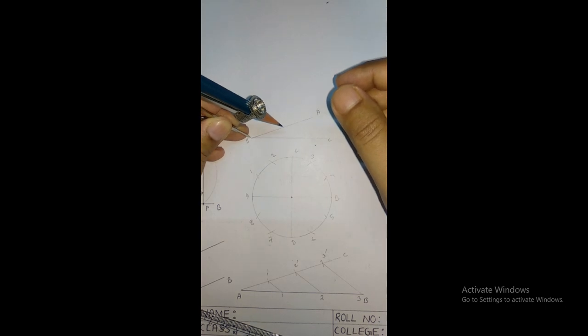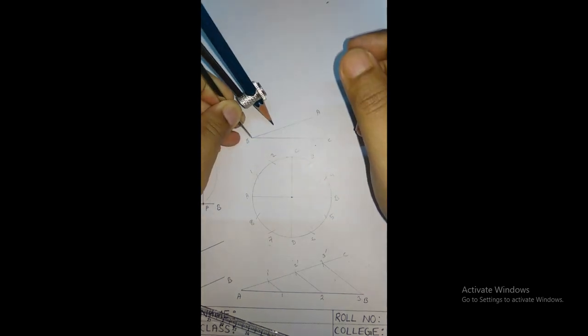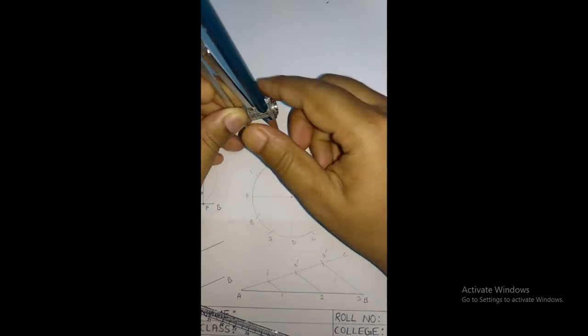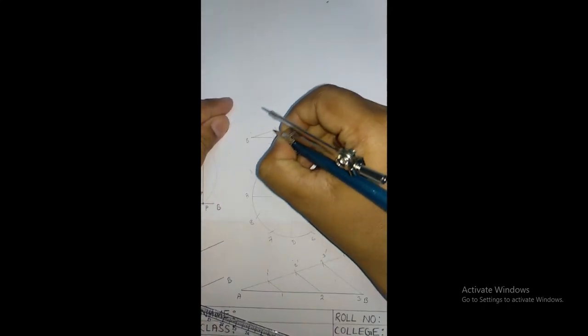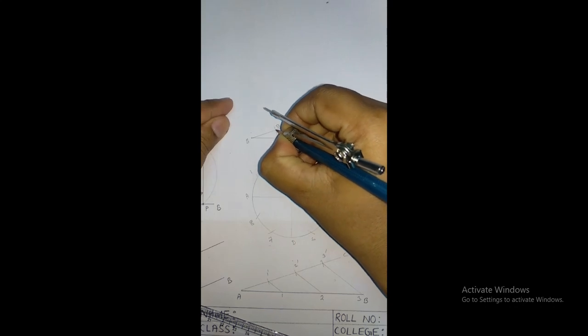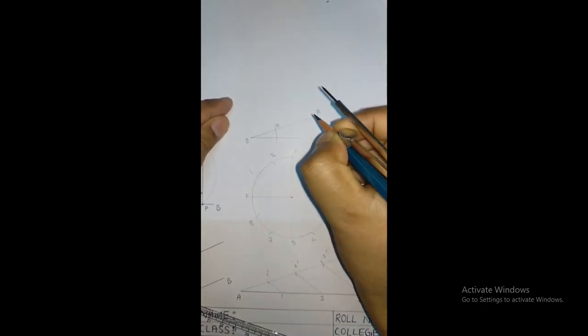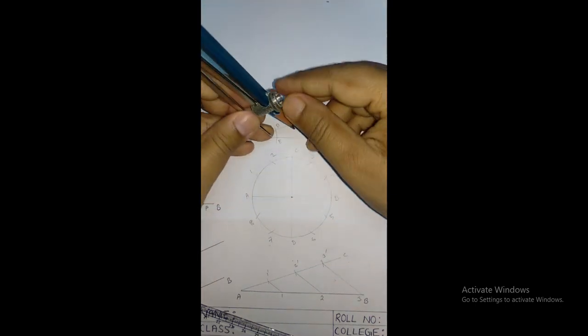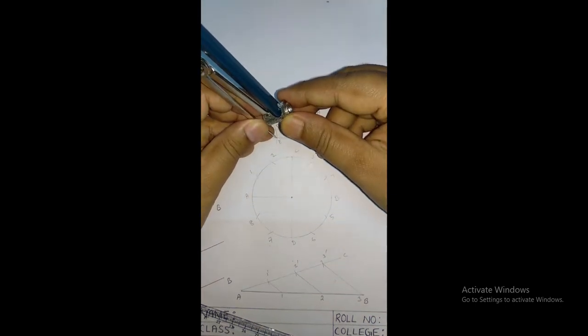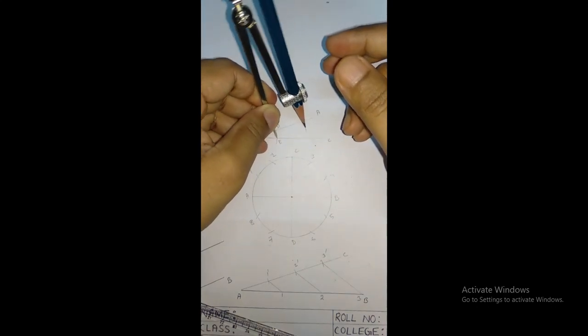Now taking B as a center (B ko center le lena hai), and any convenient radius, you have to draw an arc over here.